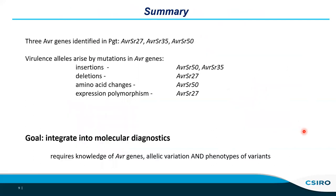In summary, there are now three avirulence genes identified in Puccinia graminis tritici: AVR-SR27, AVR-SR35 from Edward Arkenoff's group, and AVR-SR50. There are a variety of mechanisms that can give rise to virulence alleles: insertions and deletions with fairly obvious effects, amino acid changes that can't be predicted without functional testing, and expression polymorphism, which further complicates prediction of virulence or avirulence phenotype from sequence alone. The overall goal is to integrate this information into molecular diagnostic tools such as the Marple tool that Diane Saunders has been developing, which will require knowledge of additional AVR genes, their allelic variation, and the phenotypes associated with those variants.